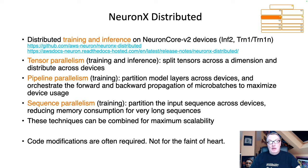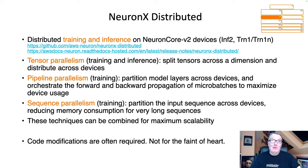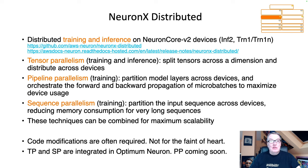Working directly with NeuronX Distributed is very difficult. Unless you really know what you're doing, I wouldn't touch it directly. That's why we integrated this in Optimum Neuron — and you'll see how simple we made it. Still, it's pretty interesting to dive into NeuronX Distributed and understand tensor parallelism and sequence parallelism, which are already available in Optimum Neuron, and pipeline parallelism, which we're currently working on right now.